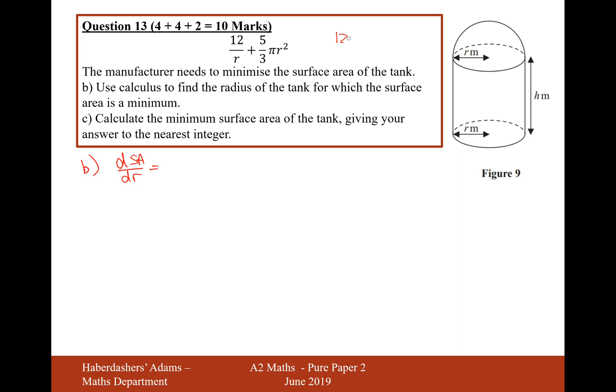It'll be minus 12r to the minus 2 plus 10 over 3 pi r. And when we've got a minimum point, the derivative is equal to 0. Let's now simplify this. It'll be minus 12 over r squared plus 10 over 3 pi r equals 0.